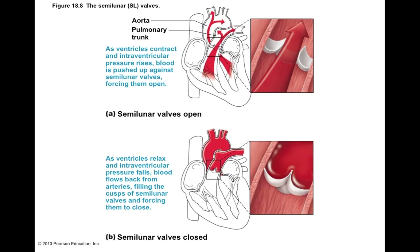When the aortic semilunar valve closes, it closes with such force that it not only creates an audible sound but also creates a pressure wave you can measure with a blood pressure cuff. If you're measuring someone's blood pressure, you would see a temporary spike when that aortic semilunar valve closes. That pressure wave transmitted throughout your blood vessels is called the dicrotic notch, which we'll talk about later.